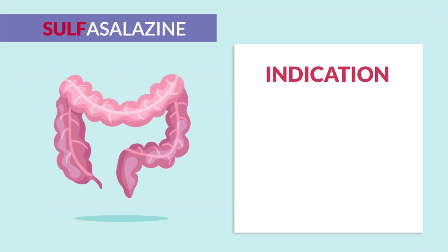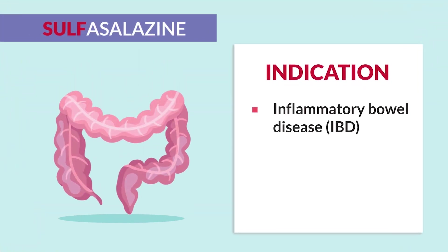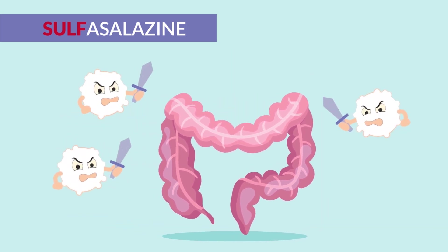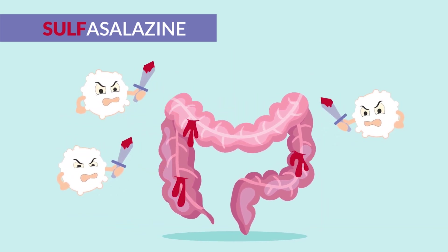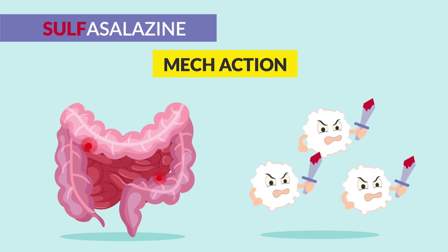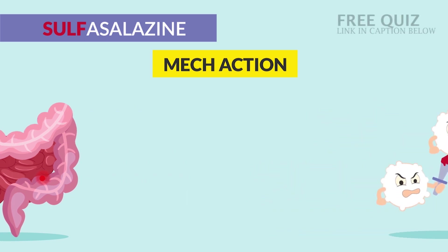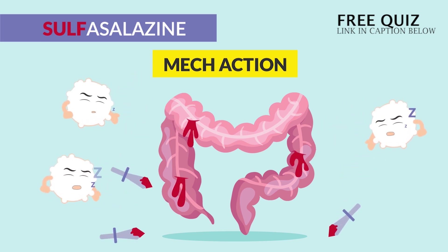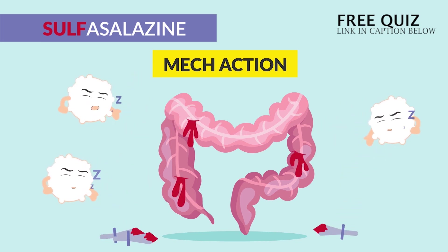Now sulfasalazine is a sulfa drug, given for inflammatory bowel disease — IBD — including both Crohn's disease and ulcerative colitis. Those are autoimmune diseases where the body is attacking itself. So this med decreases colon inflammation by inhibiting prostaglandins, which are our party poppers of inflammation, usually from an immune response. So it's considered an immunosuppressive med that weakens the body's immune system to help the body stop attacking itself.